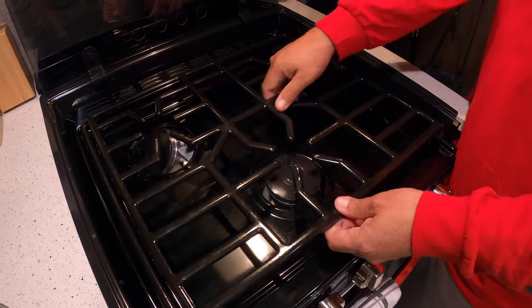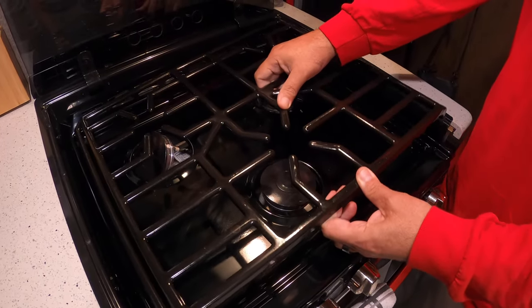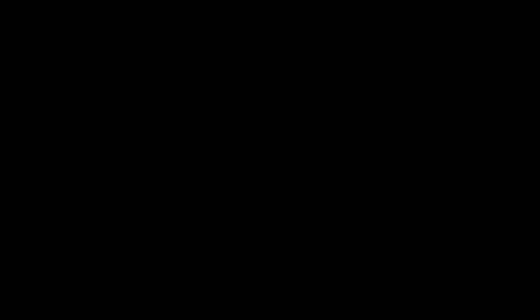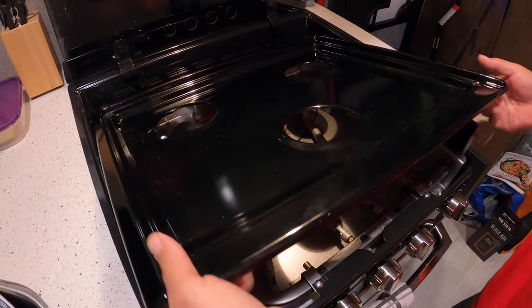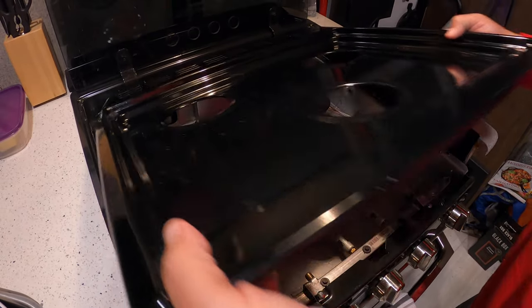The first thing you want to do is obviously remove the grill top, and then you're going to lift the top of the stove and it actually slides out pretty easily.